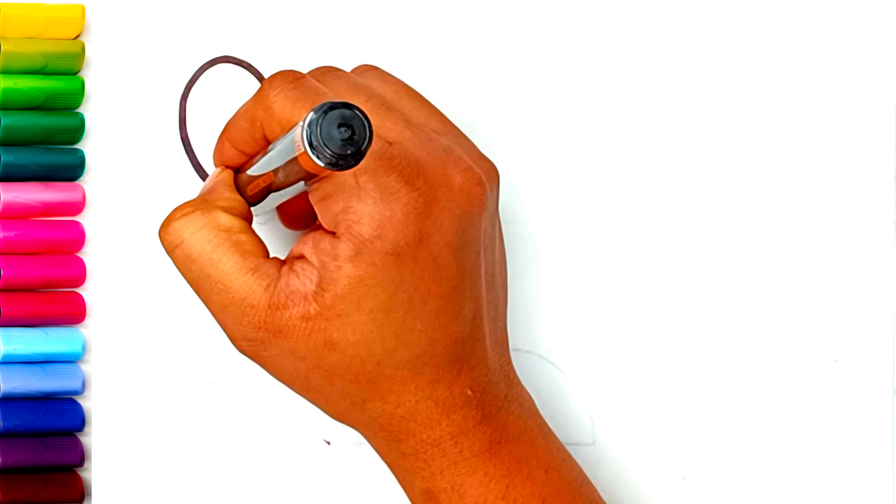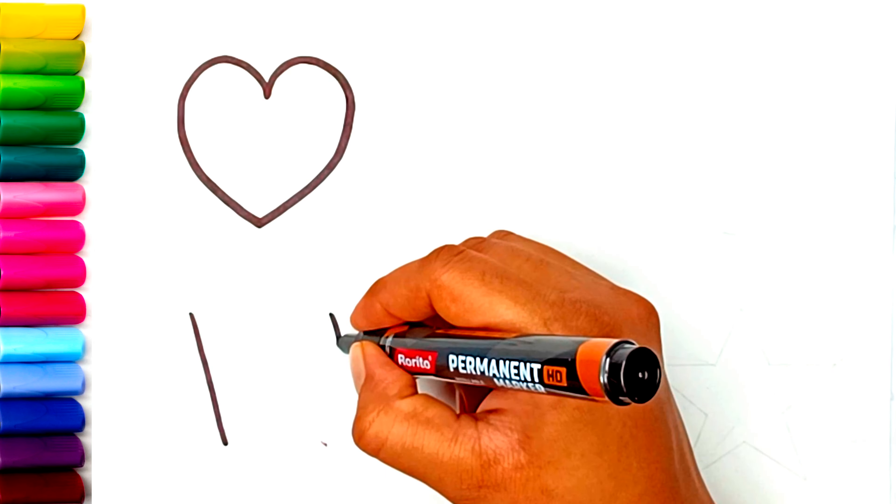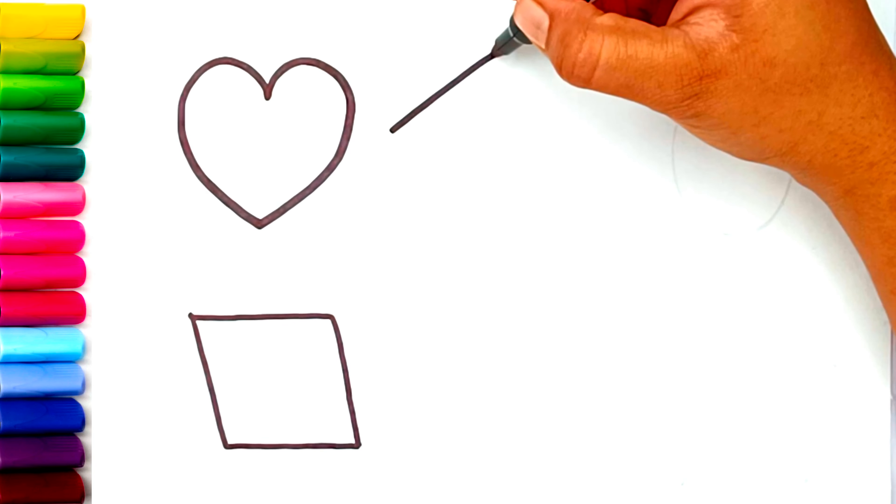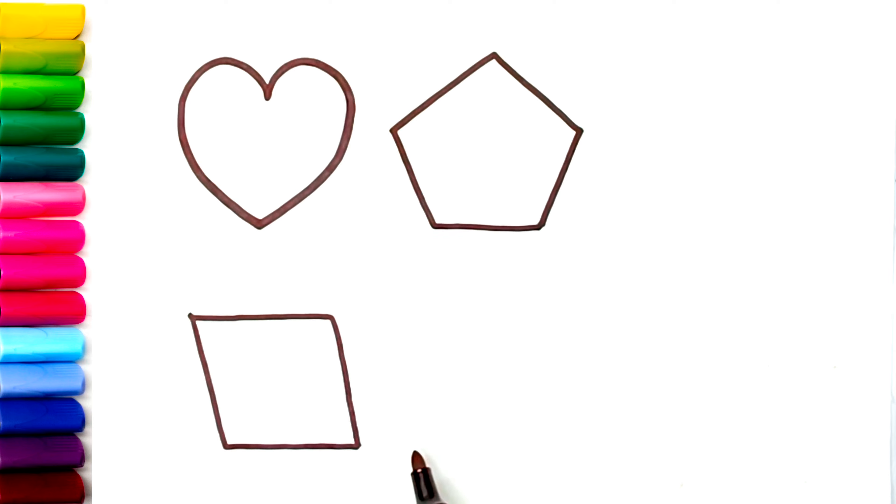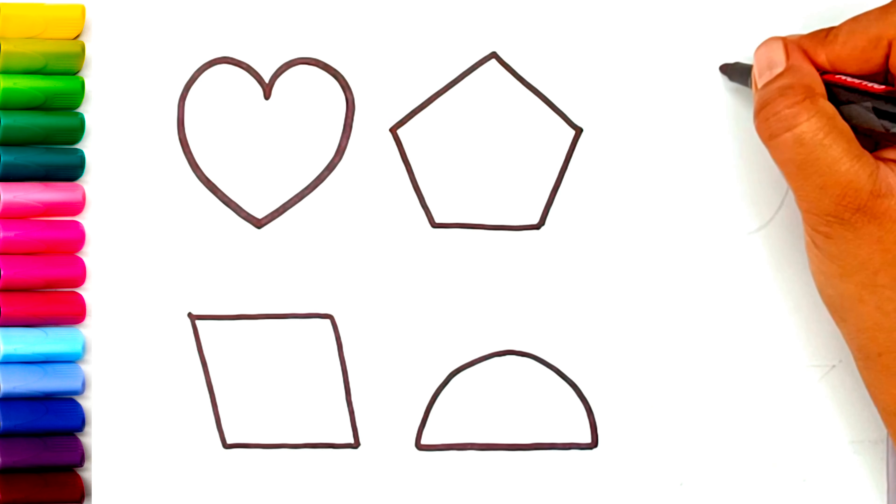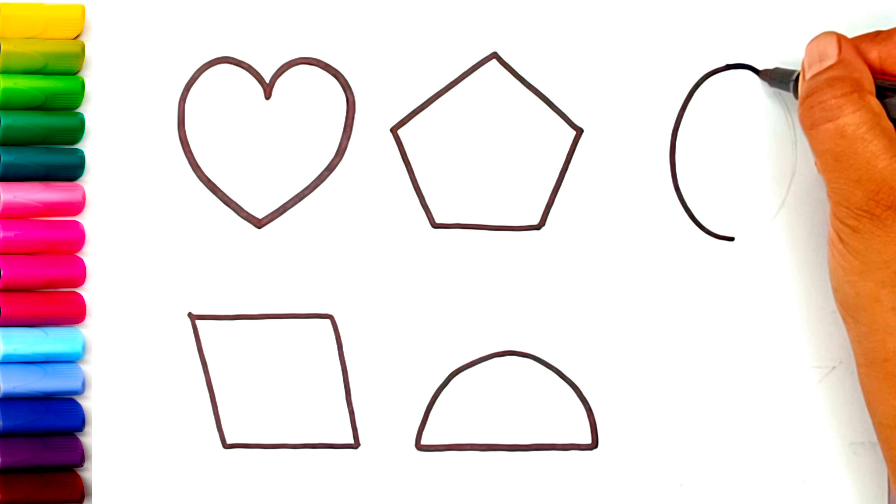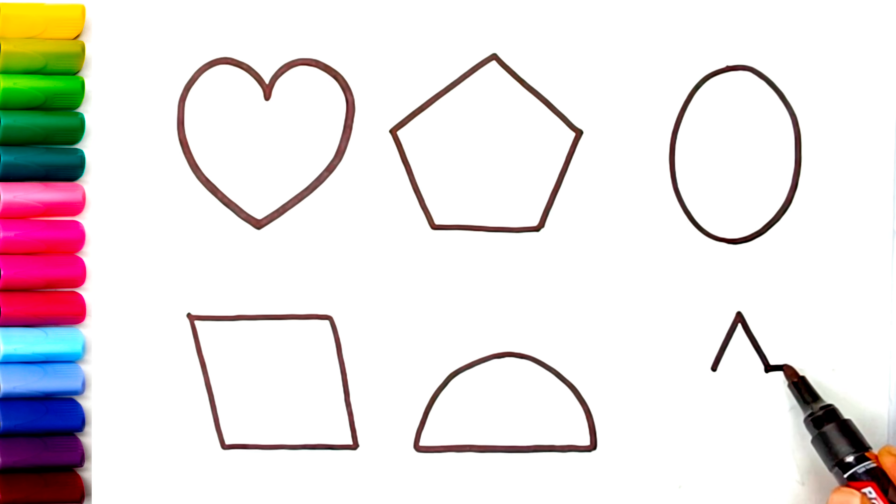Hi kids! Let's learn some shapes. Heart, rhombus, pentagon, semicircle, oval, star.